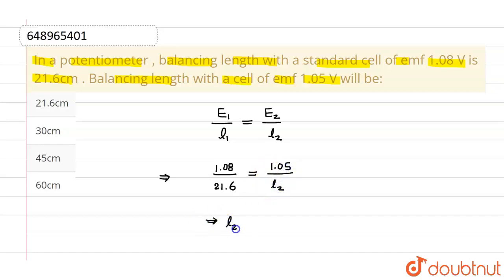So from here, L2 will be given by 1.05 into 21.6 divided by 1.08. And if you solve this, this will come out to be 21 cm.